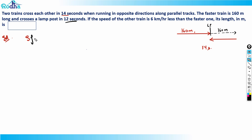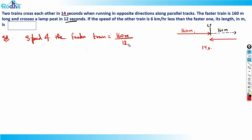So the speed of the faster train equals 160 meters divided by 12 seconds, which gives us 40/3 meters per second.